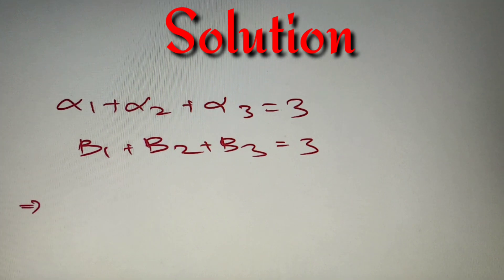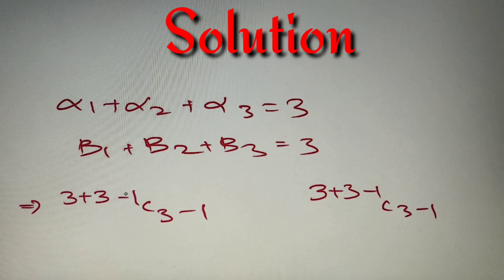If we take the first equation, the number of non-negative integral solutions is (3 + 3 - 1) C (3 - 1). For the second equation, the number of solutions is also (3 + 3 - 1) C (3 - 1). Now the question is whether we'll add or multiply these solutions.